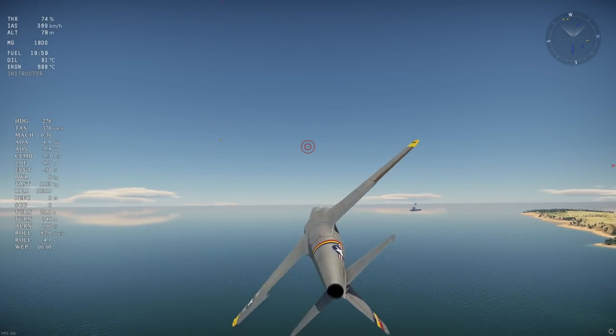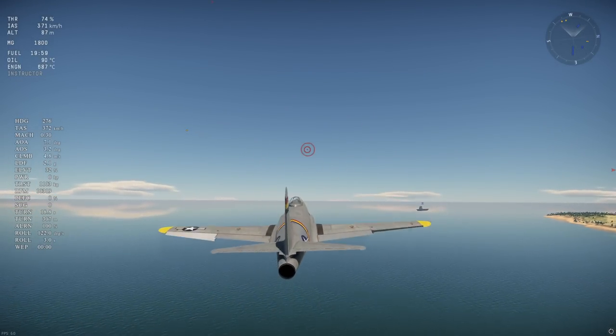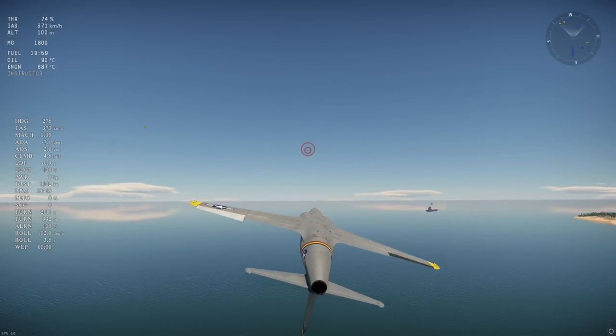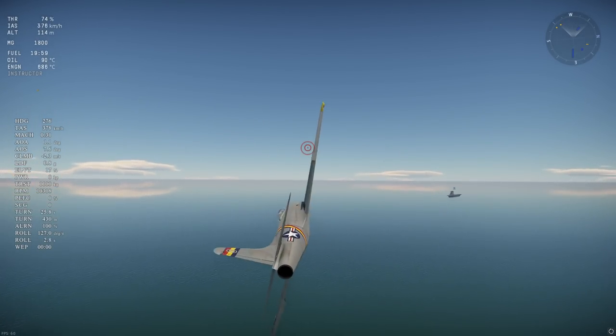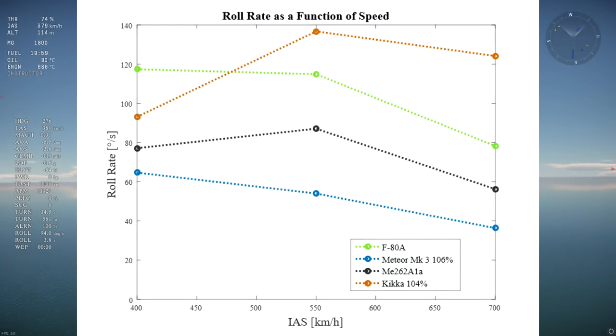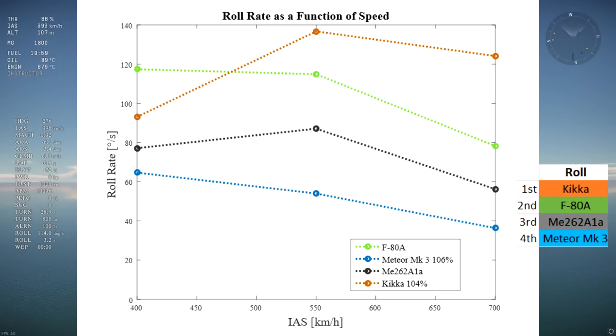As for roll, roll rate was tested at 400, 550, and 700 km/h IAS at 100 meters of altitude. Here are the results. The Kika is the best rolling aircraft for most of the relevant speed range, followed by the F-80, the ME262, and then the Meteor.